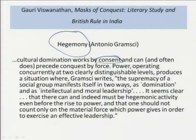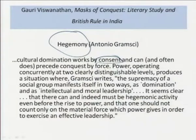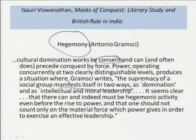There are two sides to hegemony: the usually understood sense of domination, but also in the guise of intellectual and moral leadership. This hegemony may in fact be consented to by those who are dominated, because it is seen as something desirable — a desire sometimes even created by those in power. Cultural domination works by consent and can often precede conquest by force. Power operating at two distinguishable levels produces a situation where the supremacy of a social group manifests as domination and as intellectual and moral leadership.